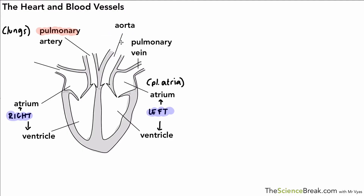The next one is the aorta — this is probably the biggest artery in the body, the main artery leaving the heart to go to the body. It comes back into the heart as the vena cava, which is a vein and the main vein that returns from the body to the heart.